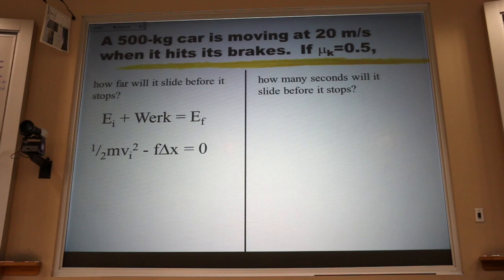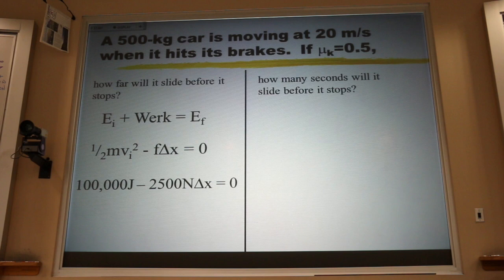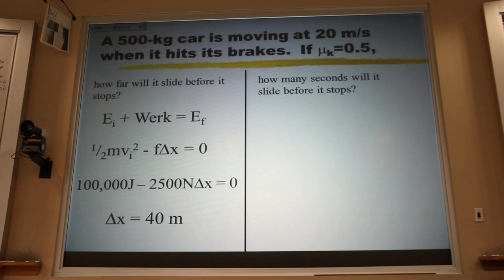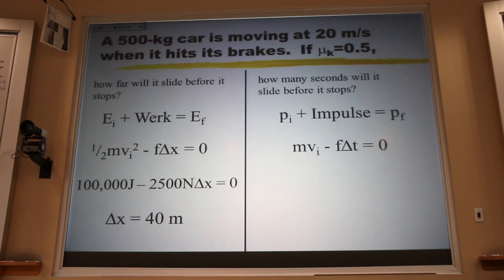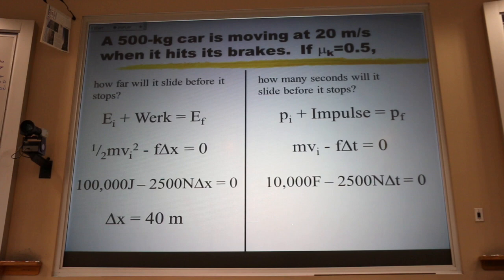For example: mass is 500 kg moving at 20 m/s. I can solve for the kinetic energy. If mu_k is 0.5 and the normal force is 5,000 N, the friction force is 2,500 N. Solving for delta x gives 40 meters. If I want to know how much time it slides, that's a momentum problem. Initial momentum is m times v; when it halts, momentum is zero. The impulse from friction (negative) removes the momentum. Plugging in gives a delta t of 4 seconds.